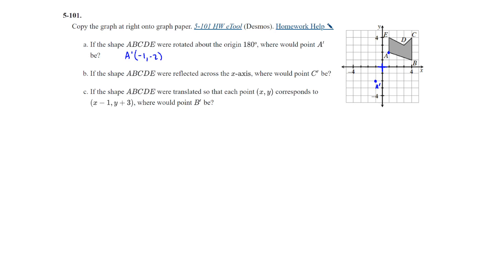If the shape ABCDE were reflected across the x-axis, where would point C prime be? So across the x-axis right here, so we can look at this, it is 4 units away, so we're going to reflect it 4 units this way, and this would represent C prime, and therefore C prime would be located at 4, comma, negative 4.